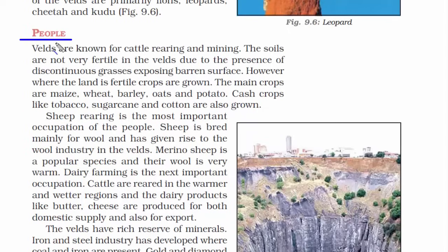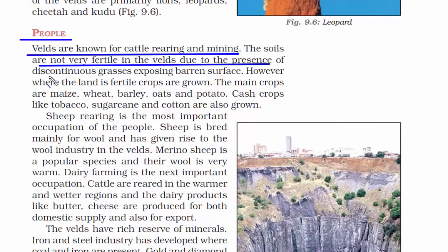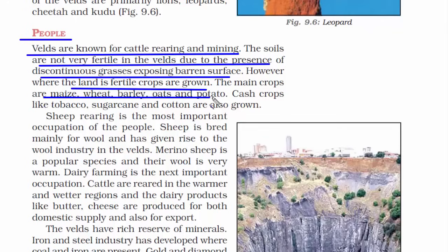Now let's get to know the people who live in the velds. This place is well known for cattle rearing and mining. Since it's a grassland, cattle rearing is common. Johannesburg is world famous for gold and diamond mining. The soils of this region are not very fertile, so the vegetation cover is sparse and the grasses are discontinuous — you'll see bare land in between the grassland. Whatever land is fertile, crops are grown: maize, wheat, barley, oats, and potato. Cash crops like tobacco, sugarcane, and cotton are also grown.